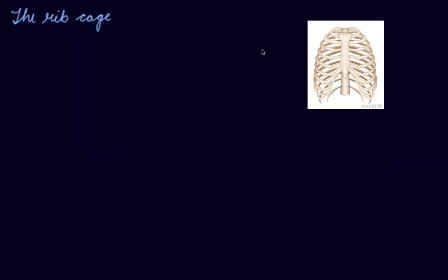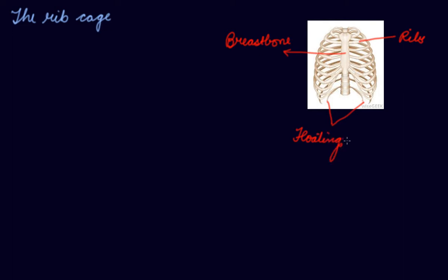Now let's study about the rib cage. This bone that you can see is your breast bone. Now these ribs — all of these are ribs. This last rib that you can see, this one and this one, is your floating rib.